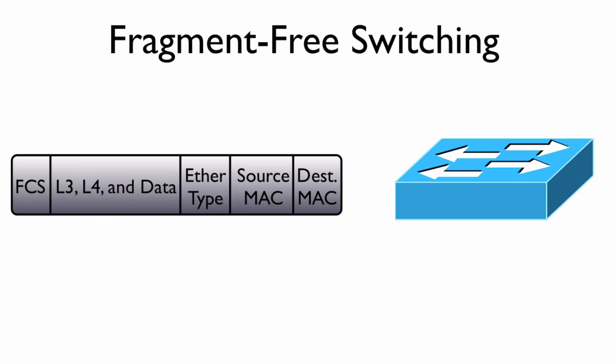With store-and-forward switching, we would get the entire frame stored in the switch, make sure it was good, and then start forwarding it. It's good that we verified it was a valid frame, but we were introducing some delay by having to receive the entire frame before we started to forward it.